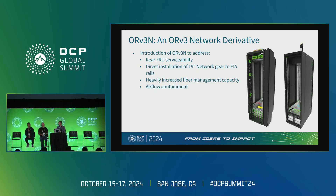Thanks to the community for listening to us present ORV3N. ORV3N is meant to address the issues that Sean has raised — real front serviceability, the ability to install network gear directly into the rack itself without requiring any adapter tray or shelves, optimized canopy cutouts to support higher fiber count, and side panels for air flow containment.